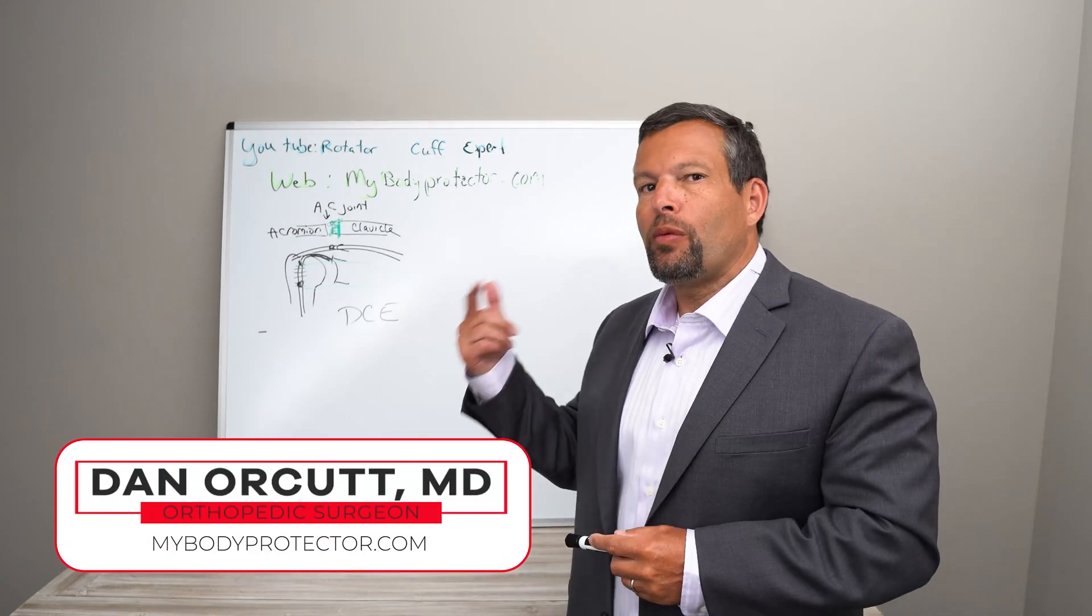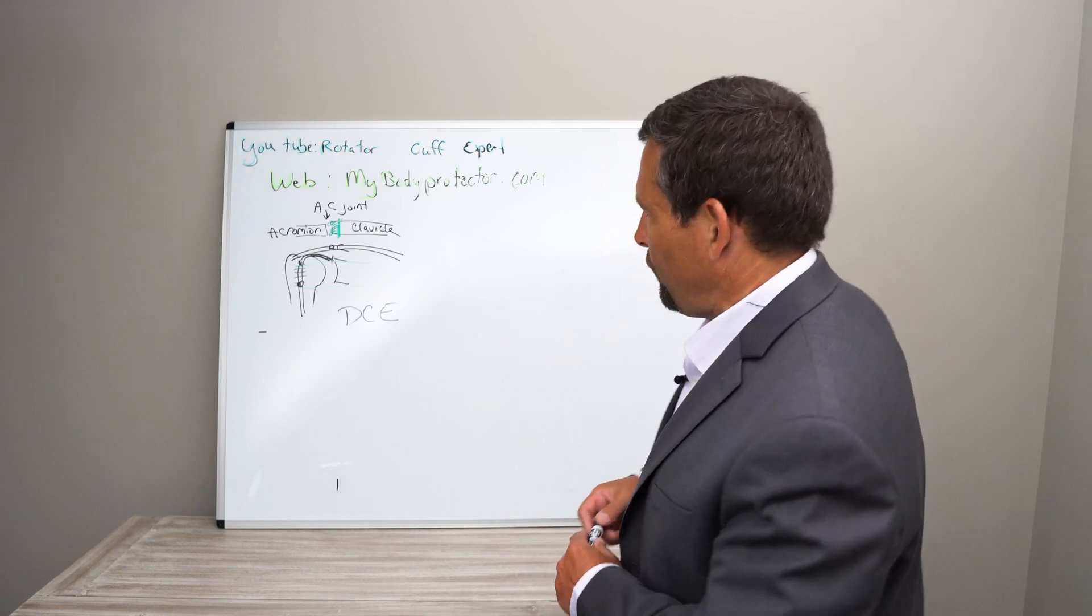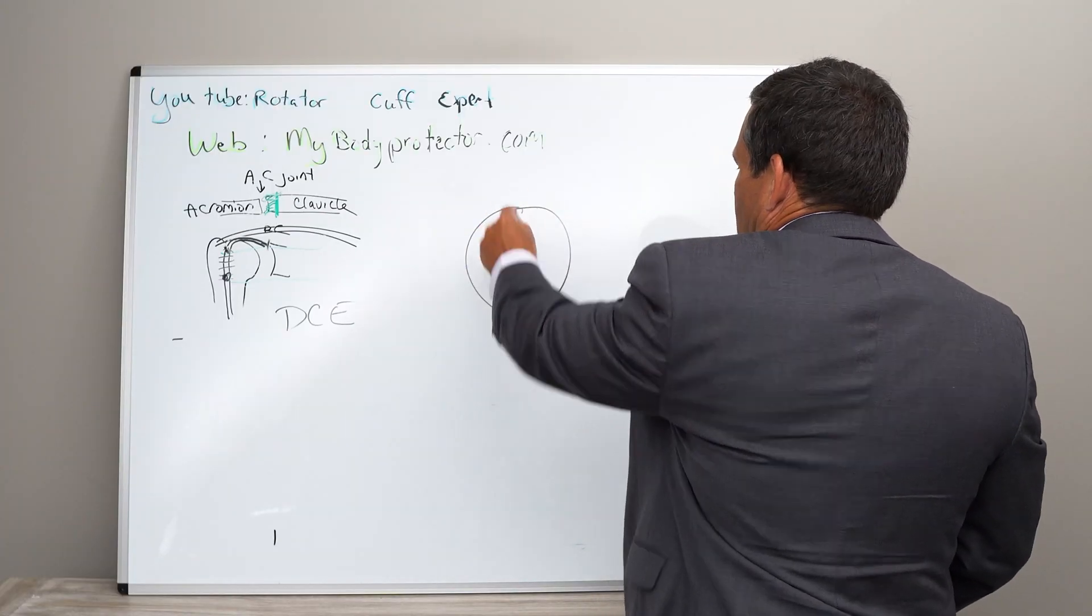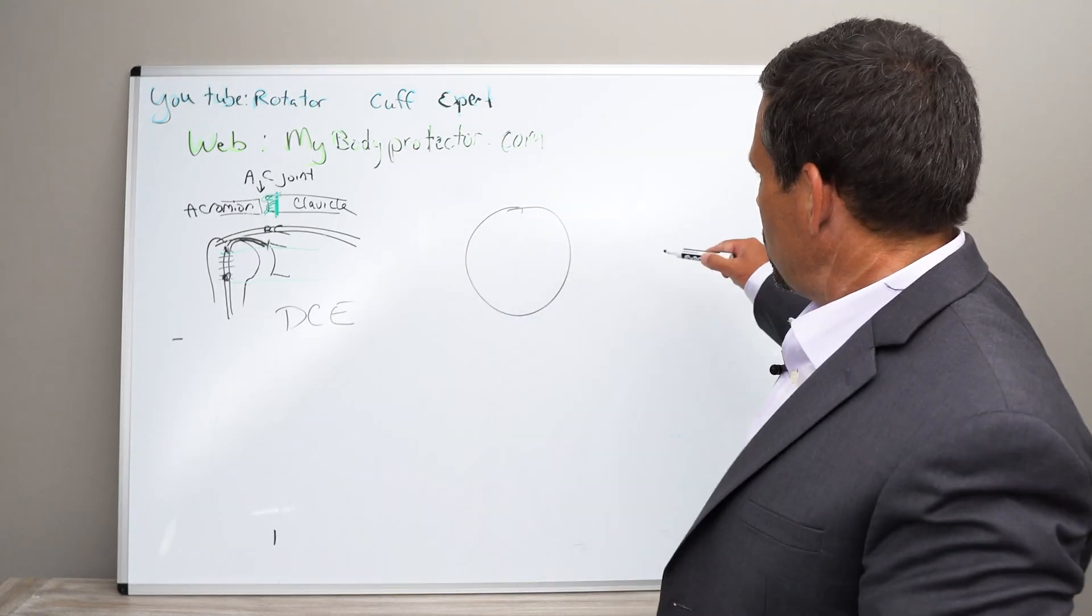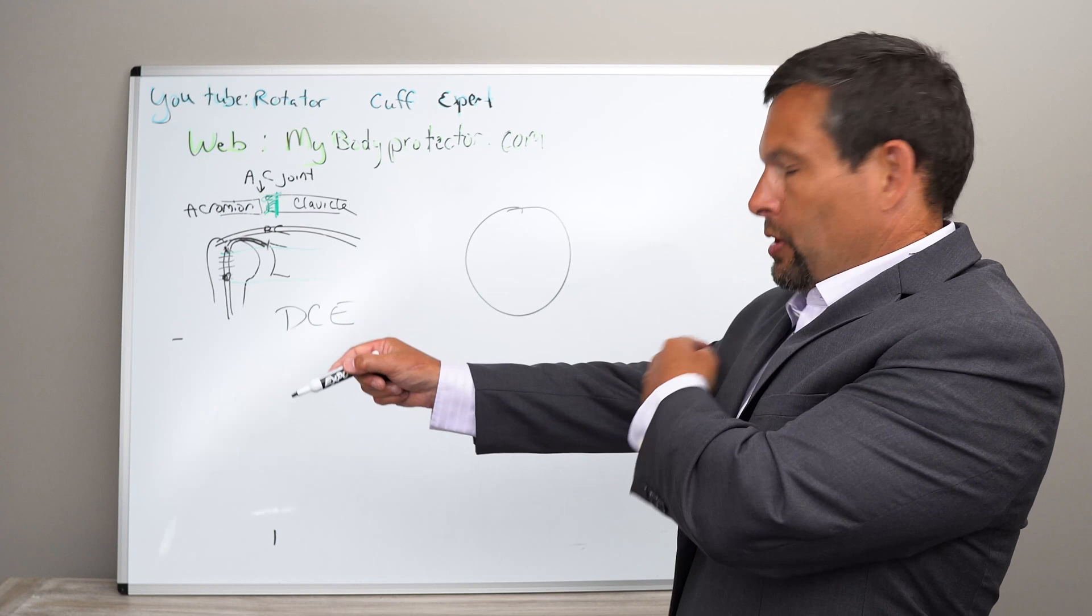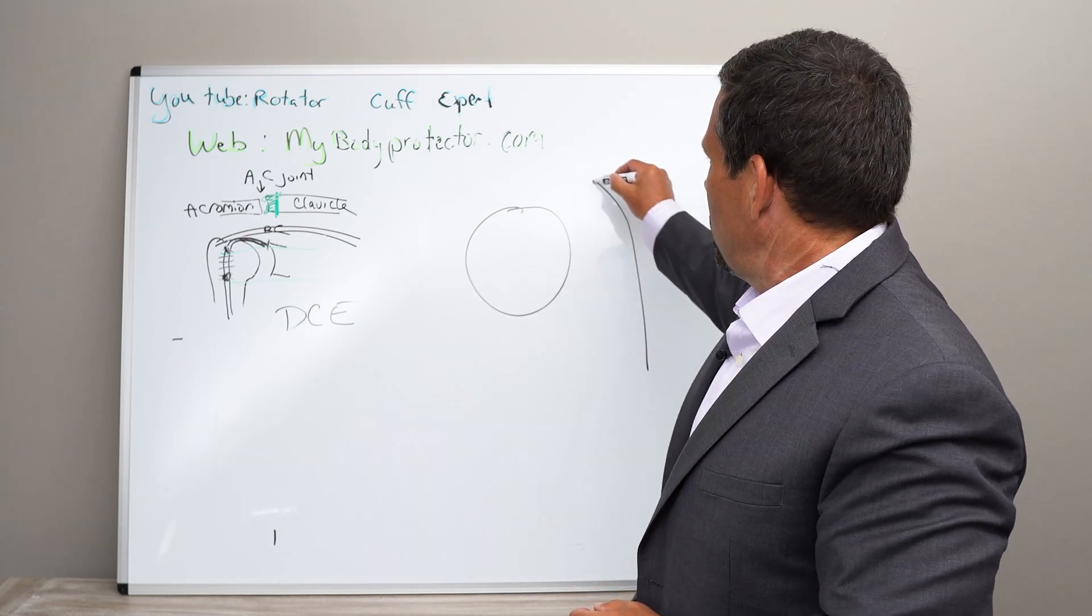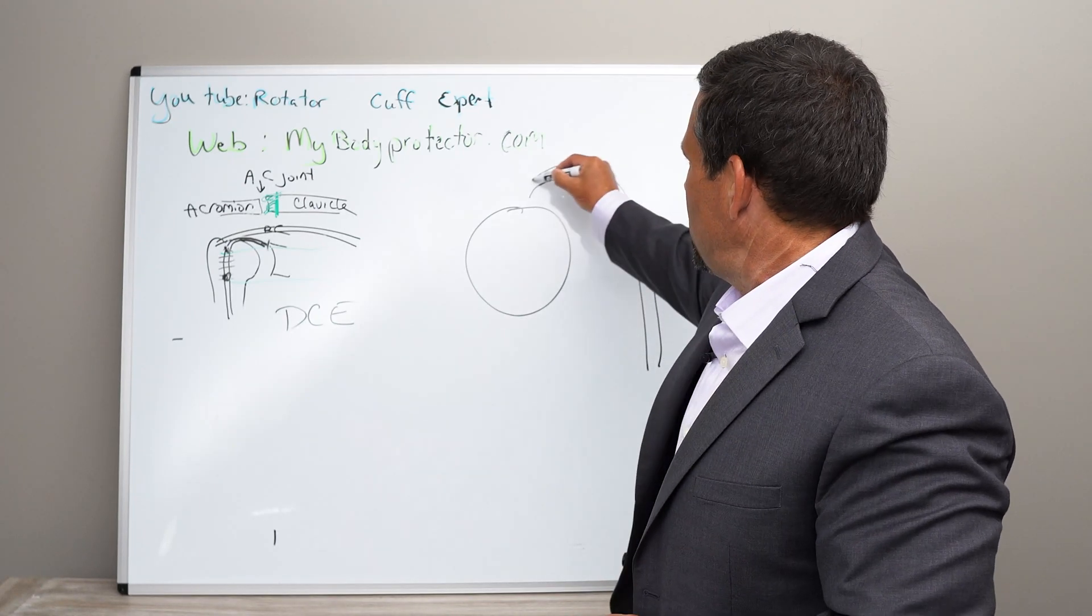We're going to talk about the biceps and where the biceps attaches to the socket. So if we look at the socket here, and if you can imagine your ball is here, the biceps comes up the front from your biceps, comes up over and attaches to the top of the socket like this.